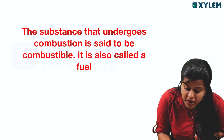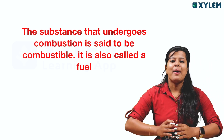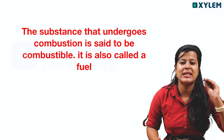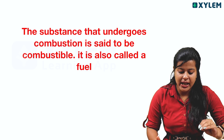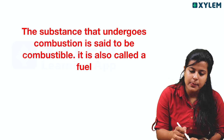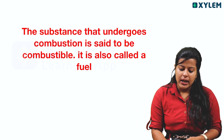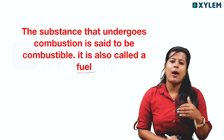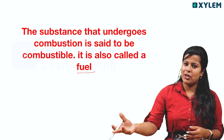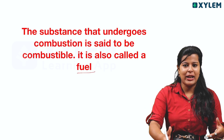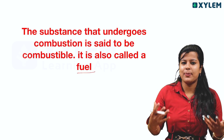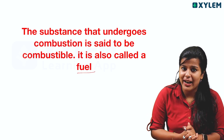The substance that undergoes combustion is said to be combustible. If you say combustible, it is combustible. We have a substance. Combustible substance is also called fuel. We have already known fuels. There are a lot of fuels — for example, we have petrol, diesel, and that kind. That is fuel. We have to burn, to combust, a combustible substance — that is fuel.